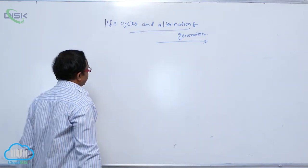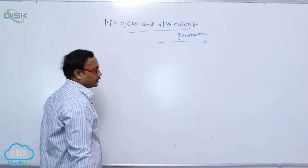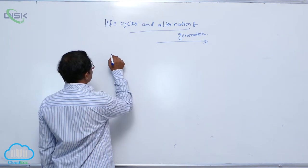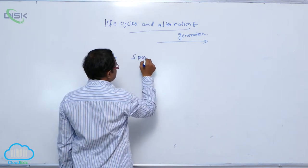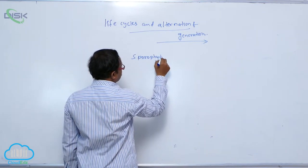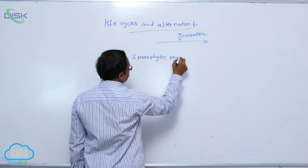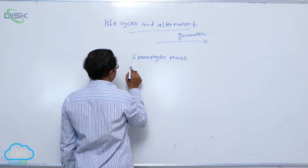So generally, in any plant, in any plant life cycle, two phases are present: sporophytic phase and gametophytic phase.